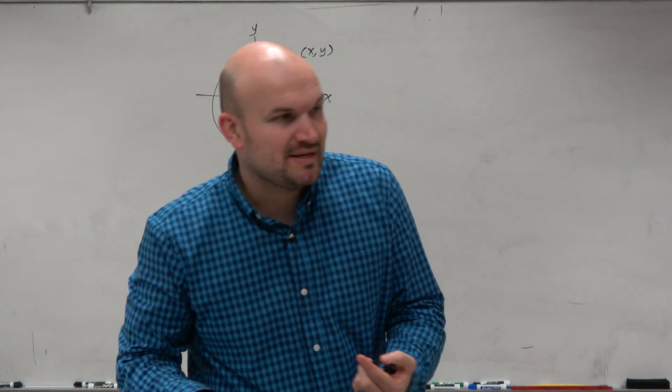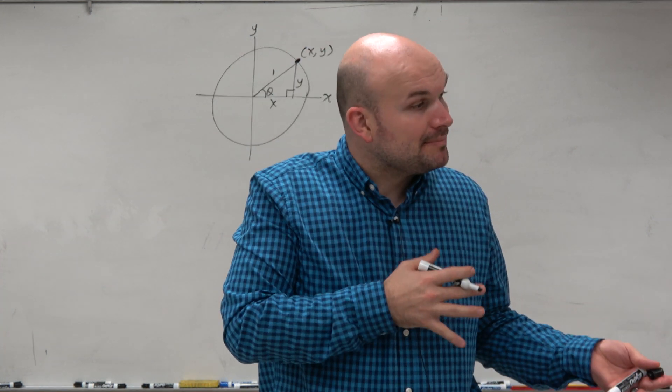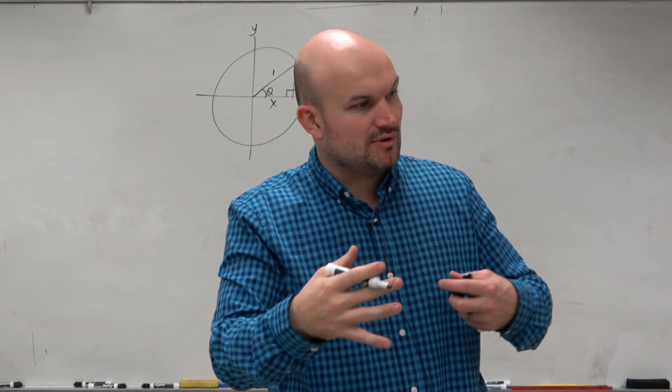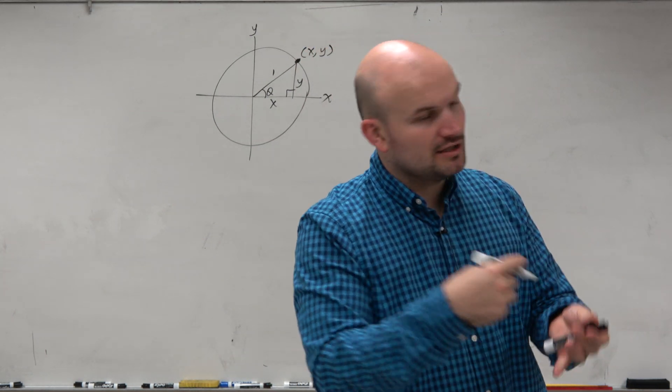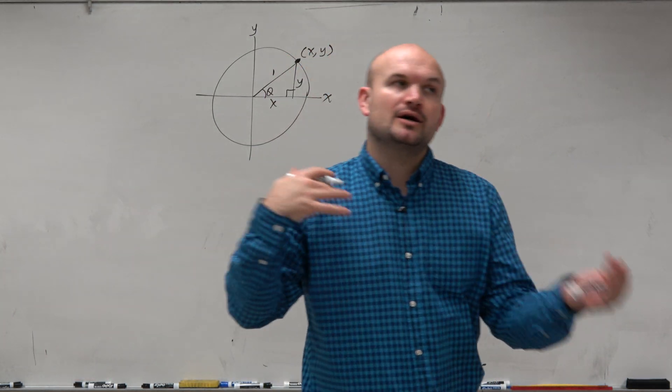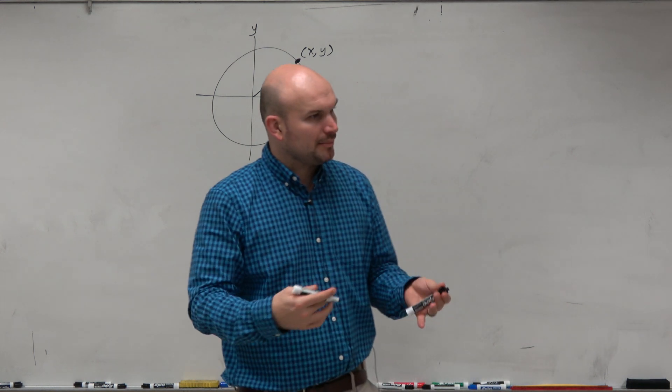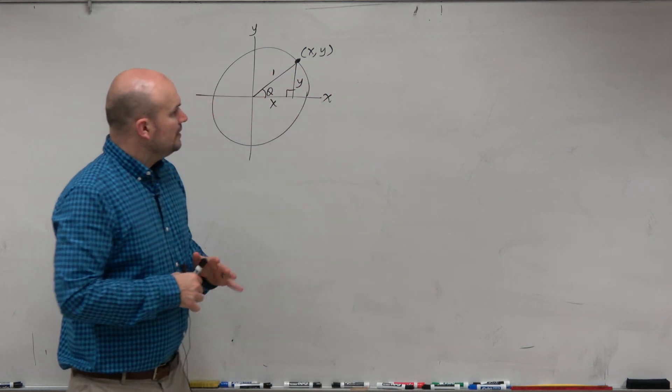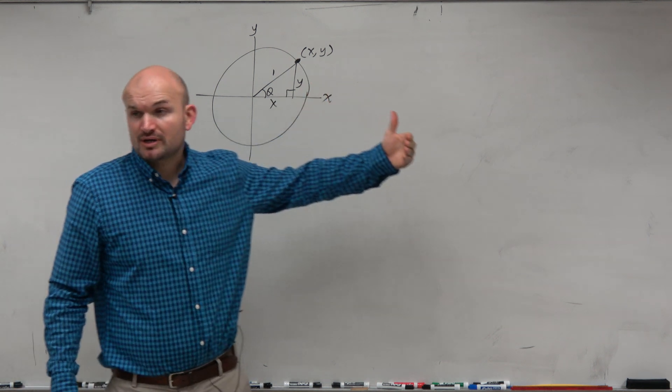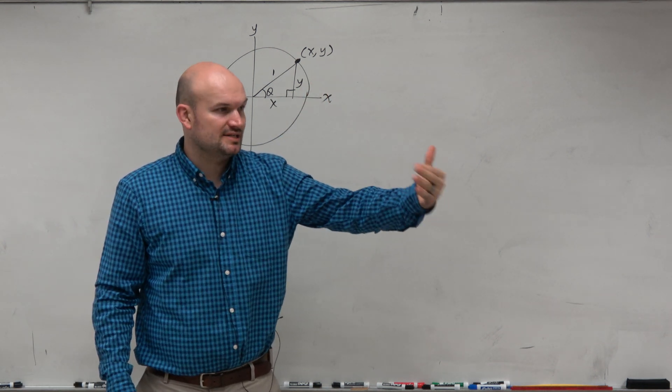And we like this. Because even though we remembered that sine, cosine, tangent, you know, were like comparisons of sides of a triangle, like opposite over hypotenuse, adjacent over hypotenuse, and blah, blah, blah, blah, we found some shortcuts by using the unit circle.